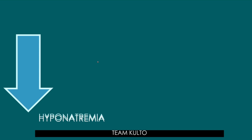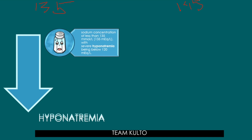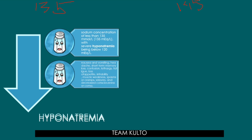A decreased concentration of sodium — what we call hyponatremia — occurs whenever there is a relatively increased amount of body water relative to sodium. This happens with some diseases of the liver and kidney, in patients with congestive heart failure, in burn victims, and in numerous other conditions. Hyponatremia is defined as a sodium concentration of less than 135 milliequivalents per liter, with severe hyponatremia being below 120 mEq/L. Signs and symptoms include nausea and vomiting, headache, short-term memory loss, confusion, lethargy, fatigue, loss of appetite, irritability, muscle weakness, spasms or cramps, seizures, and decreased consciousness — or in the worst case, coma.